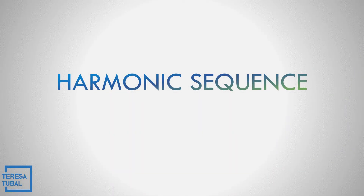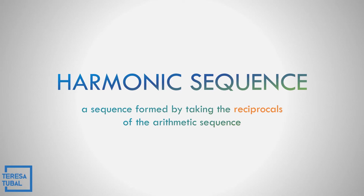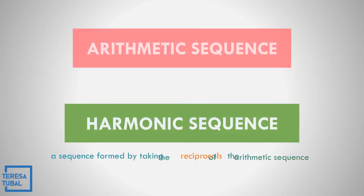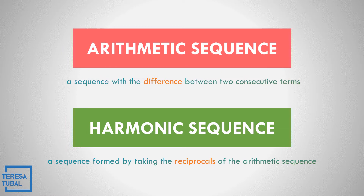What is harmonic sequence? It is a sequence formed by taking the reciprocals of the arithmetic sequence. Let us compare between arithmetic and harmonic sequence. Arithmetic sequence is a sequence with a difference between two consecutive terms. While the harmonic sequence, it is a sequence formed by taking the reciprocals of the arithmetic sequence.